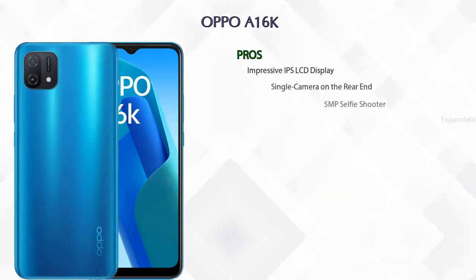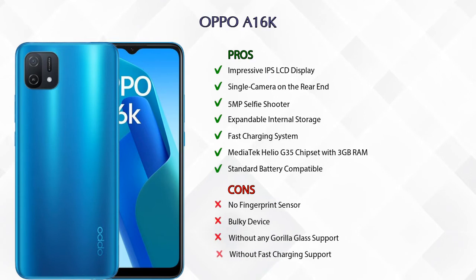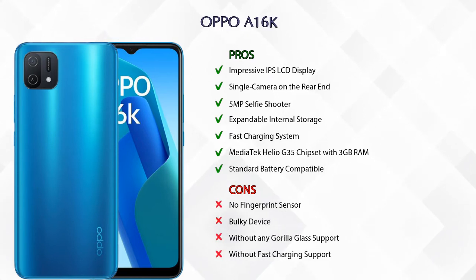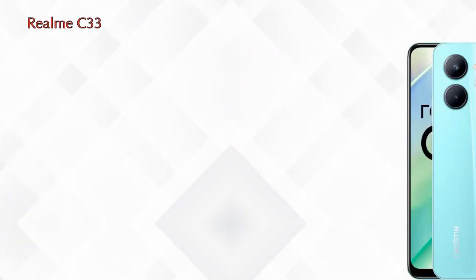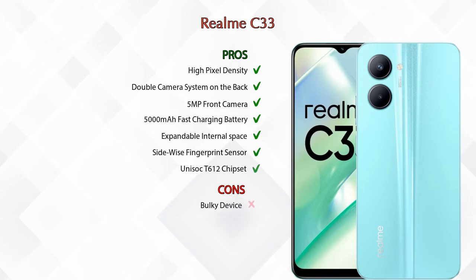Now let's talk about pros and cons. The Oppo A16k has seven pros and four cons. The Realme C33 has seven pros and one con.